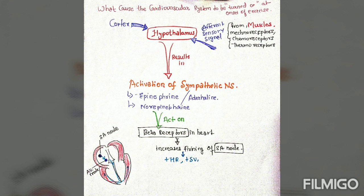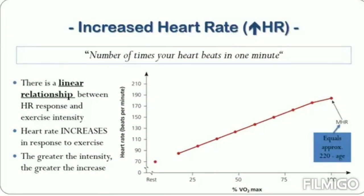These commands generate fast, frequent impulses that increase heart rate and stroke volume. This increased plateau of heart rate is notable. Our resting heart rate is normally 72 beats per minute, but it increases with exercise.